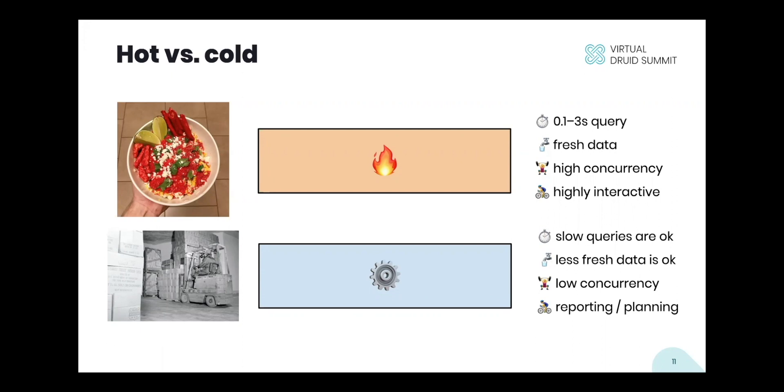You're generally going to have low concurrency for this cold data. It's going to be driven by a relatively smaller team of analysts. It's not going to be used by everybody in your company and it's going to mostly be used for reporting and for planning. So not highly interactive workloads, but workloads where most of the queries are reporting queries or planning queries that are sort of figured out ahead of time.